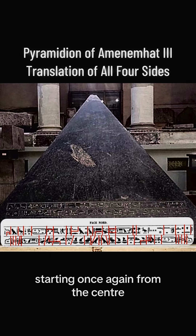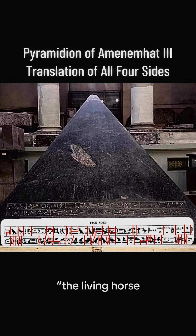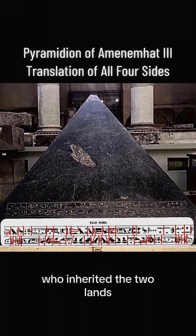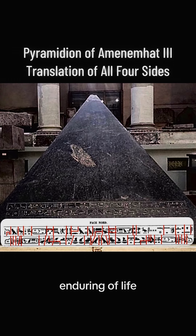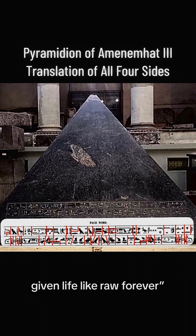Starting once again from the center and going towards the right: The living Horus, the great of might. The two ladies who inherited the two lands. The golden Horus, enduring of life. The king of Upper and Lower Egypt, Nimaatre. Given life like Ra forever.